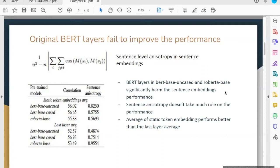However, sentence anisotropy doesn't take a significant role in the performance. The static token embeddings average achieves better sentence embedding performance overall.